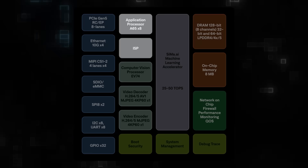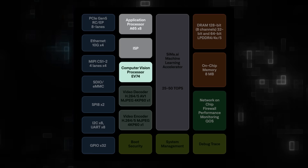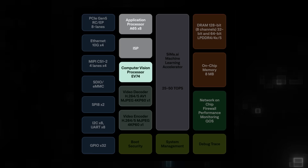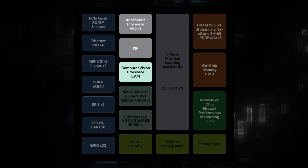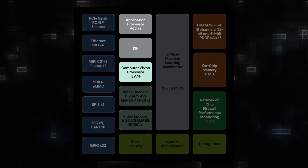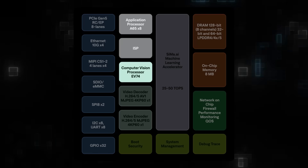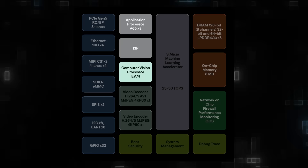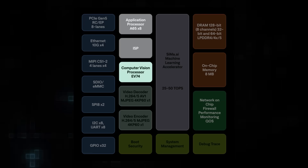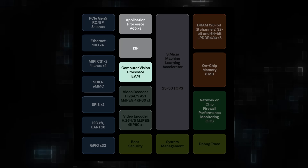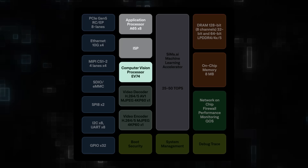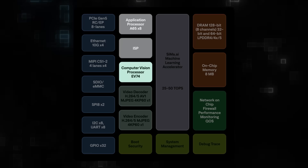Next, there is the Computer Vision Processor, a powerful EV74 DSP specifically designed for pre-processing and post-processing tasks. It accelerates vision-based AI applications by efficiently handling image and video data, ensuring low latency and high throughput.